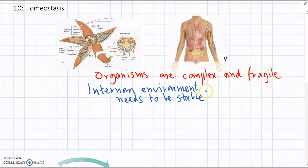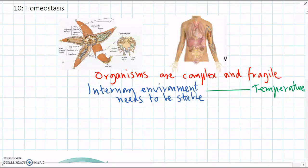Things that they need to keep stable are things like the body temperature. For mammals and birds at least, some animals, their body temperature can change, and we call those cold-blooded animals.